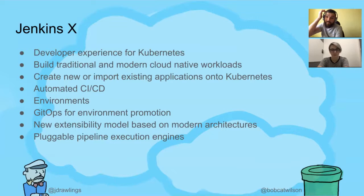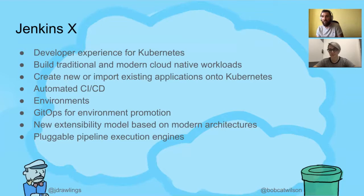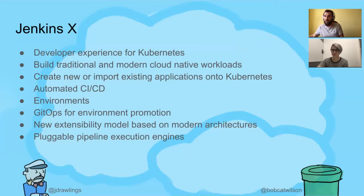Jenkins X also looks at GitOps recommended practices, where any change needed to your cluster happens via a Git repository. If you want to tweak memory settings or install a new application, you automate a pull request to a Git repository. When that's approved, you've got traceability — who approved it, who proposed it — and when it's merged, it's rolled out to that environment.